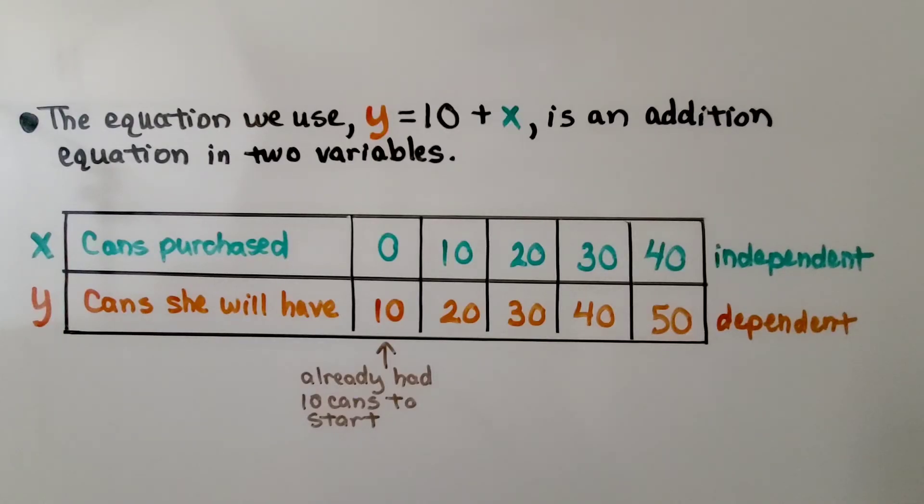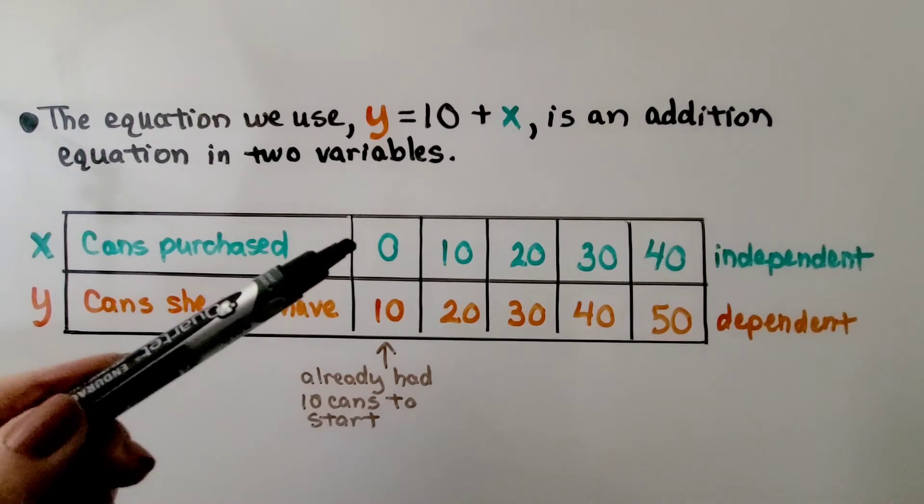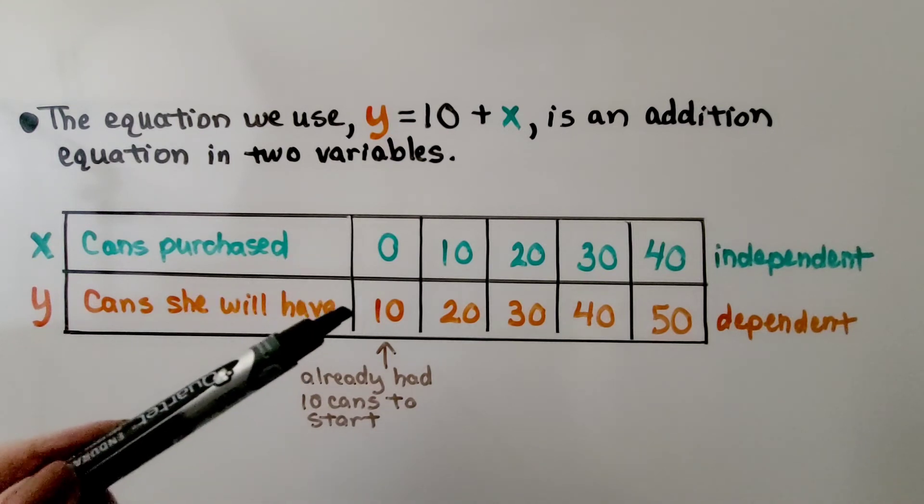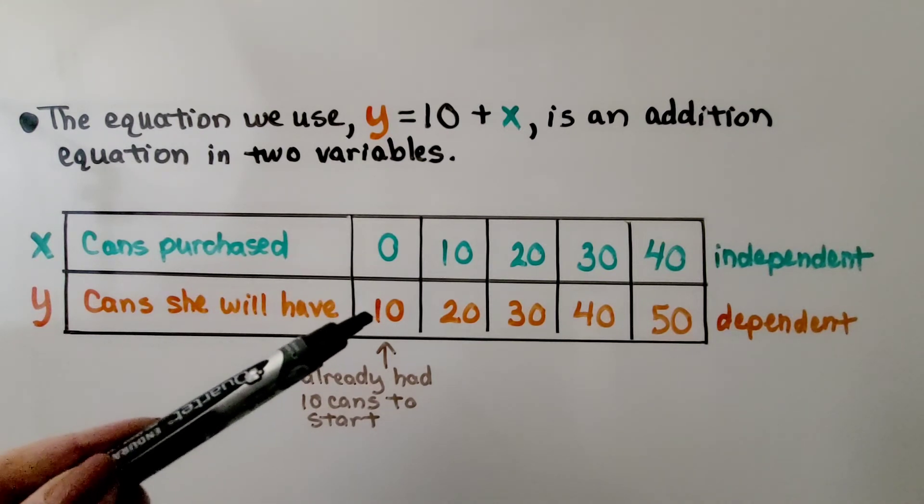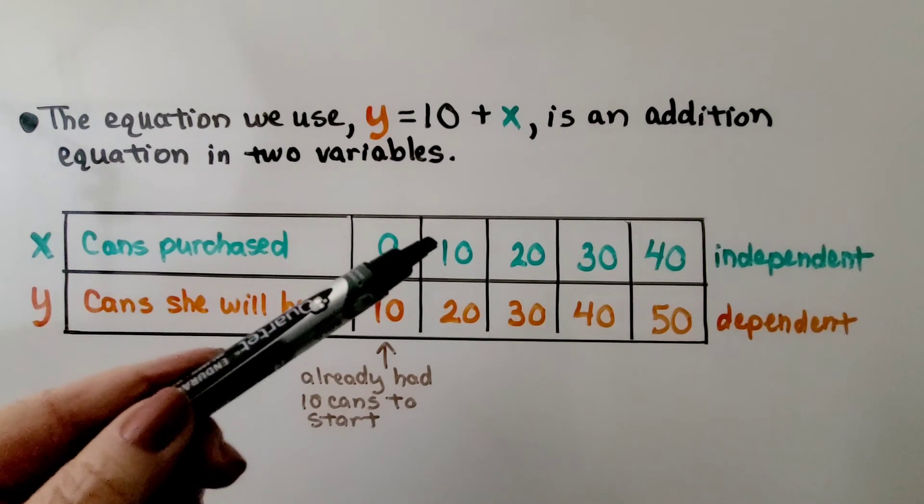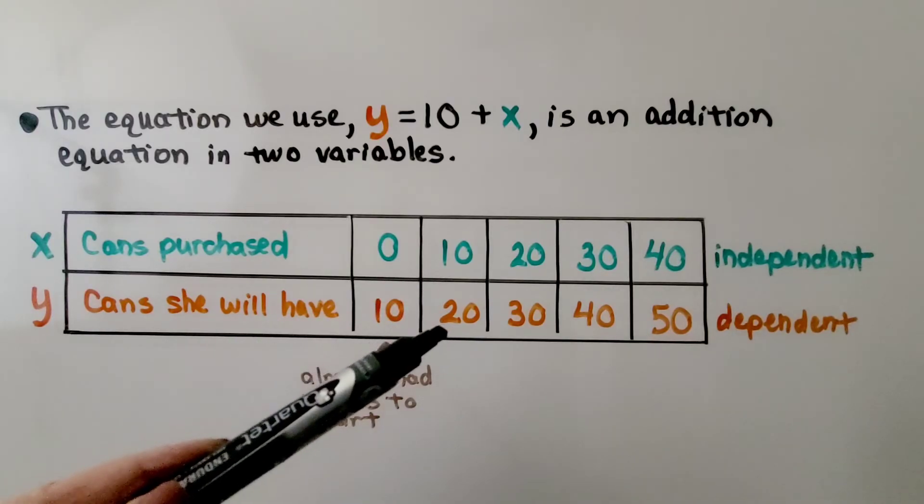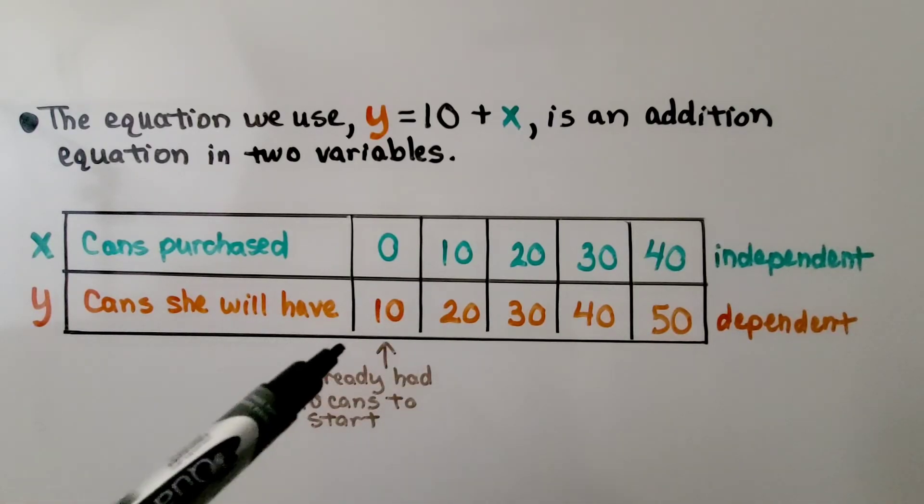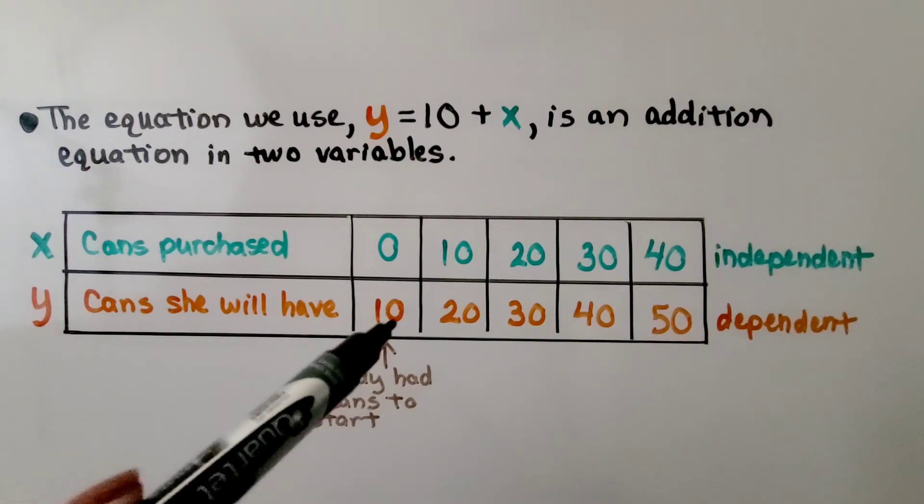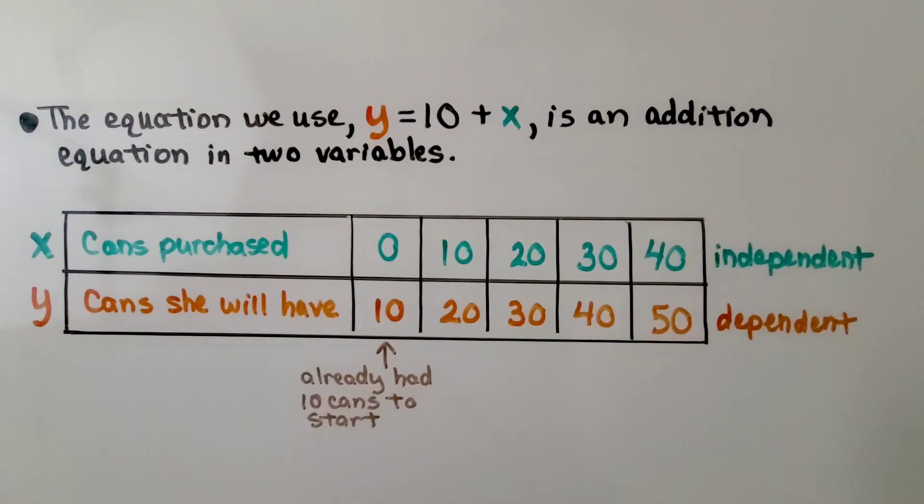The equation we use, y is equal to 10 plus x, is an addition equation in two variables. We have our x values and our y values. If she doesn't buy any cans, she already had 10 cans to start, so she'll have 10. If she buys 10, now she's going to have 20. y is equal to this 10 she started with plus the amount she purchases.